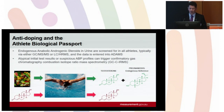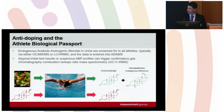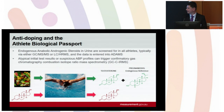If, however, the athlete had been doped with an artificial version of the steroid, the carbon isotope ratio of the marker steroid in the athlete's urine would be different to that of the reference compound, and that difference can trigger an adverse finding.